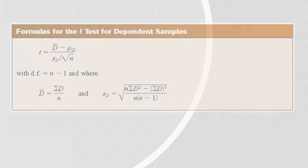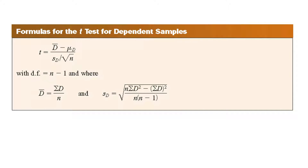The formula for the t-test for dependent samples is: t equals d-bar minus mu sub D, all over the standard deviation of d divided by the square root of n. The degrees of freedom is equal to n minus 1. Here, d is the difference of a pair.